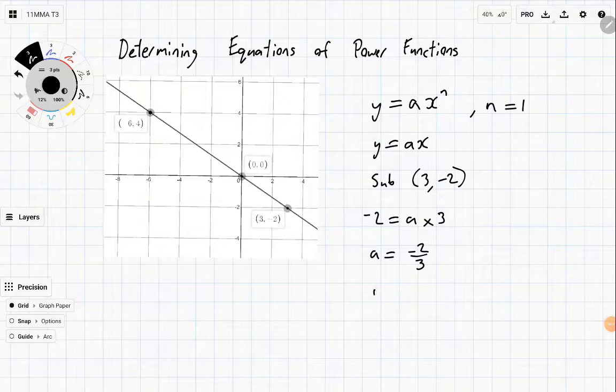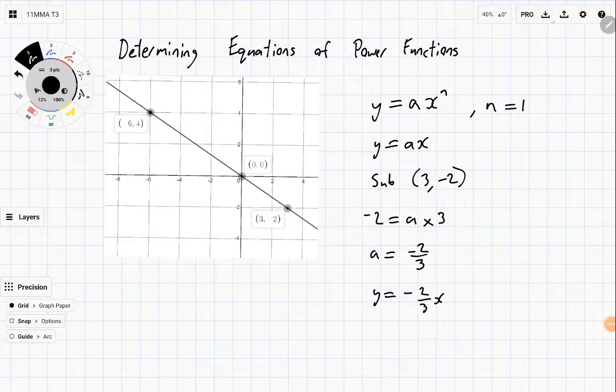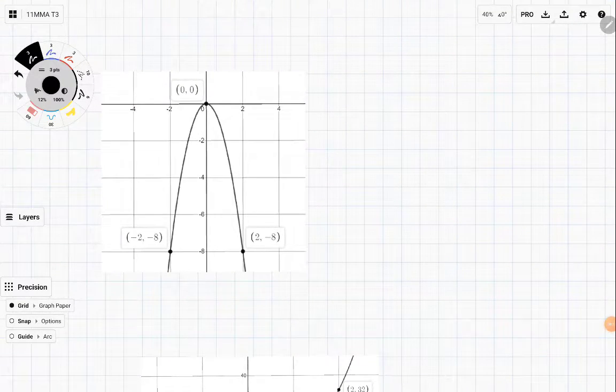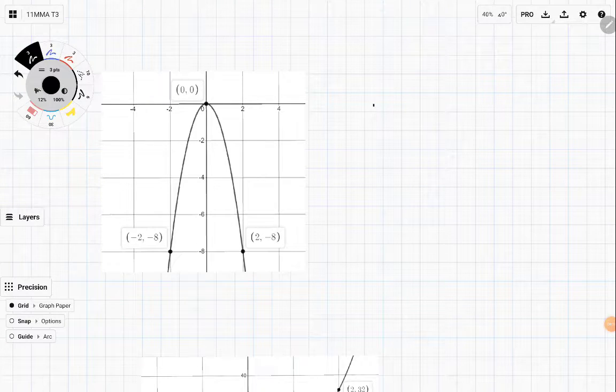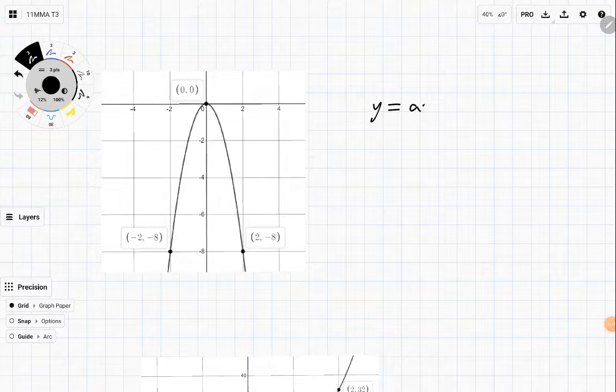And that's it, the equation is then (-2/3)x, finished. You work out n visually, then you sub in a point. Same thing for the next one. The next one is a quadratic, so y = ax².